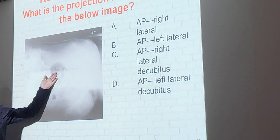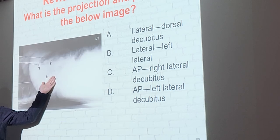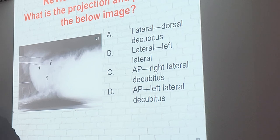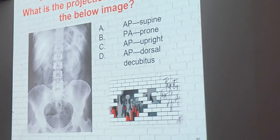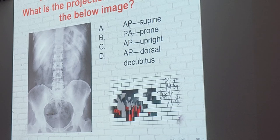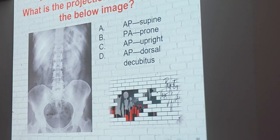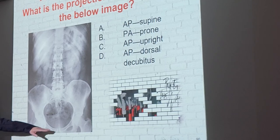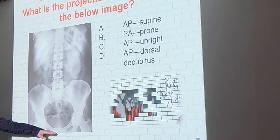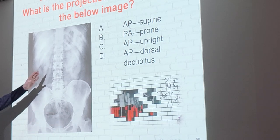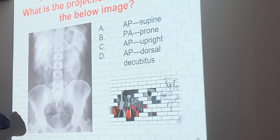Reviewing projections: AP is front to back; lateral is side to side. For the next image, the projection is AP. The position — it looks upright, but it's actually supine. You can confirm it's supine because the pubic symphysis is visible, which is indicative of a KUB or AP supine. If the diaphragm were included, it would be upright. For chest x-rays, if there's no marker you assume PA; for abdomen, you don't rely on the marker — if the pubic symphysis is included, it's always KUB or AP supine.